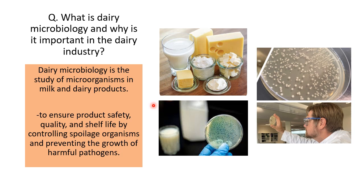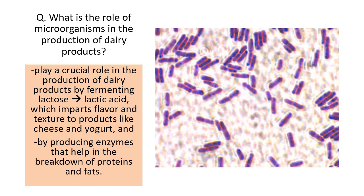Raw milk is first treated — it is pasteurized — then used for making other dairy products. Starter cultures are required in that process. Microbiology is also used to detect and prevent contamination. When the product is ready, QC checks for the presence of harmful pathogens to ensure safety for human consumption. During storage, the shelf life must not be affected by unwanted organisms — that is also the role of the microbiologist.